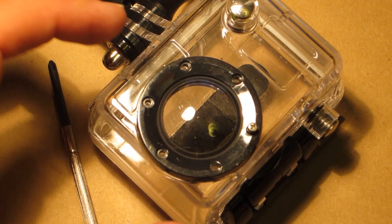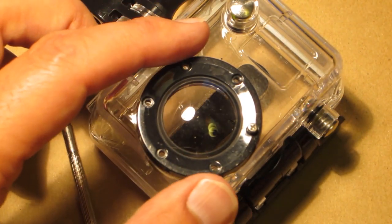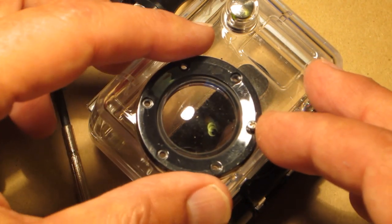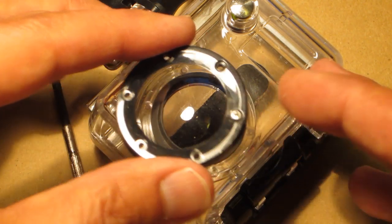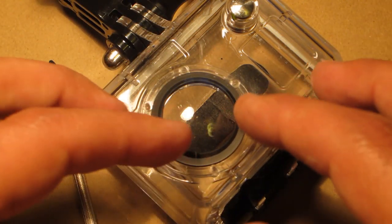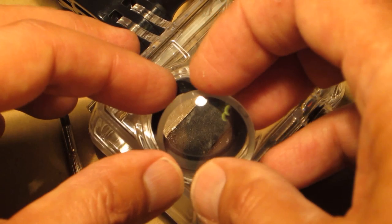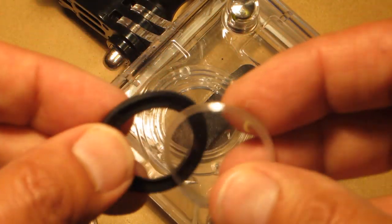The first step will be to remove the six screws from the black ring that holds on the convex lens and the O-ring. You can then take off the convex lens and the O-ring, and these will not be used anymore.